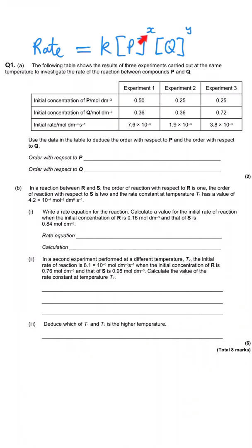These two values — the indices, the powers that the concentration terms are raised to — are called the order with respect to P and the order with respect to Q. What we have to do is use the data from these three experiments to work out what the order of reaction is for P and Q.